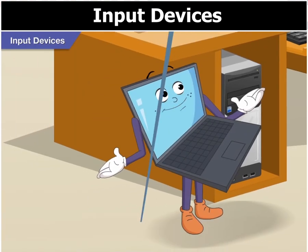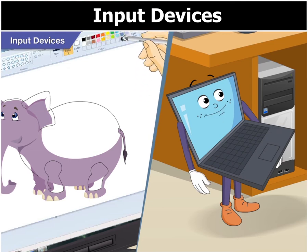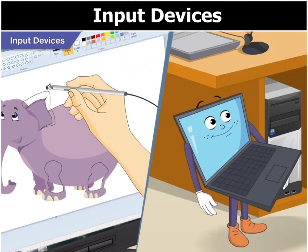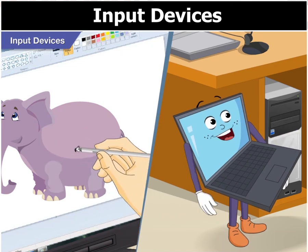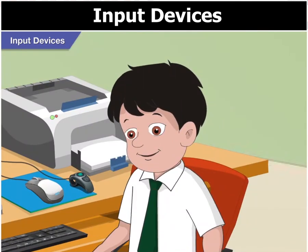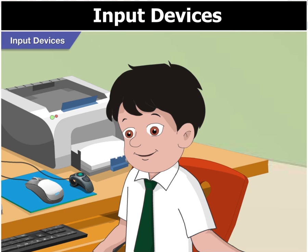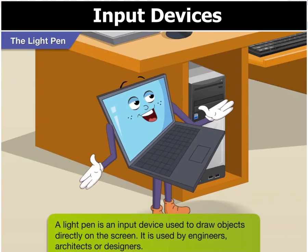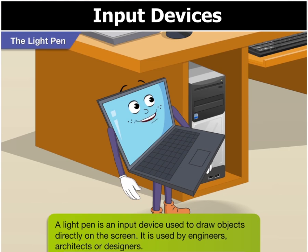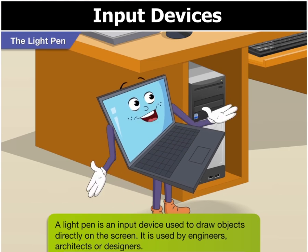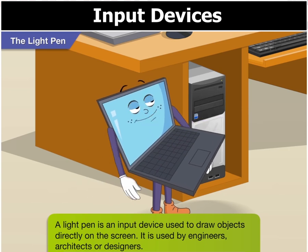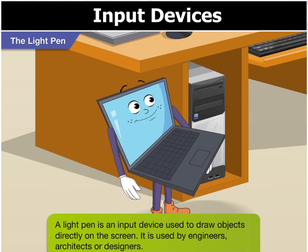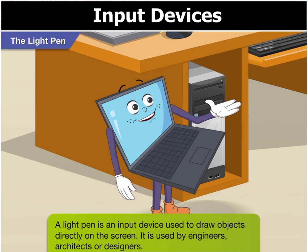Goggle, apart from the input devices you see here, there are others too. Well, which ones are those? The first one is a light pen. A light pen? Is it some kind of pen that produces light? No Goggle, a light pen does look like a pen, but it is actually an input device that is used to draw objects directly on the screen. It is used by engineers, architects and designers.